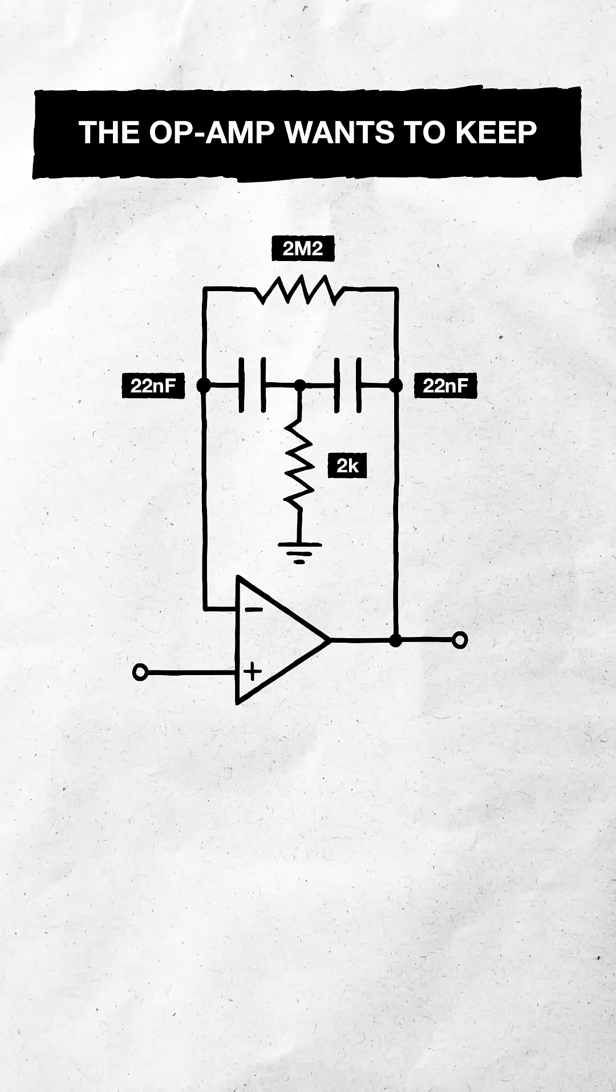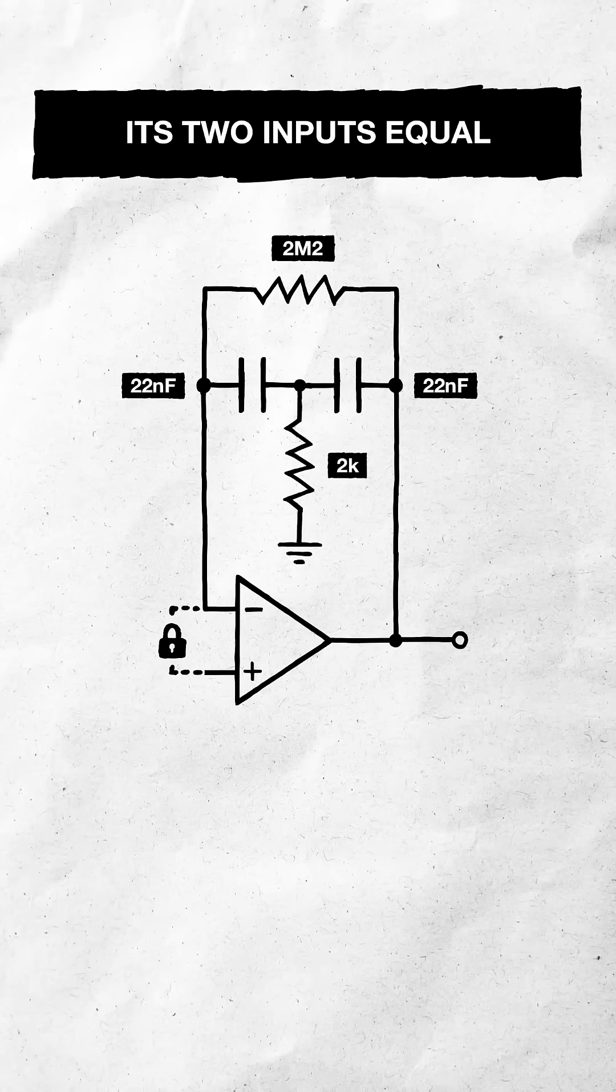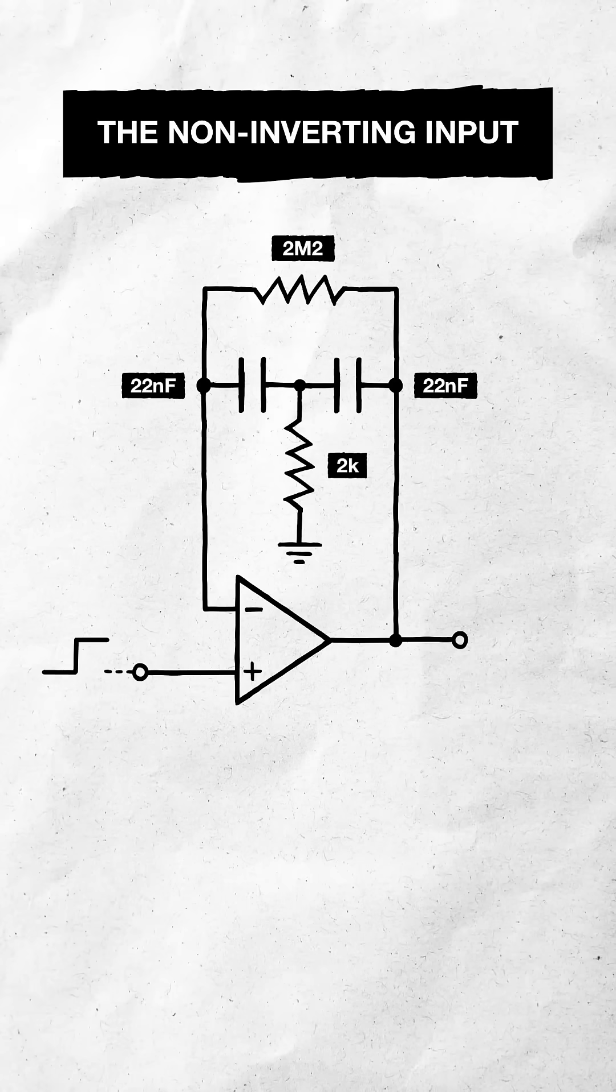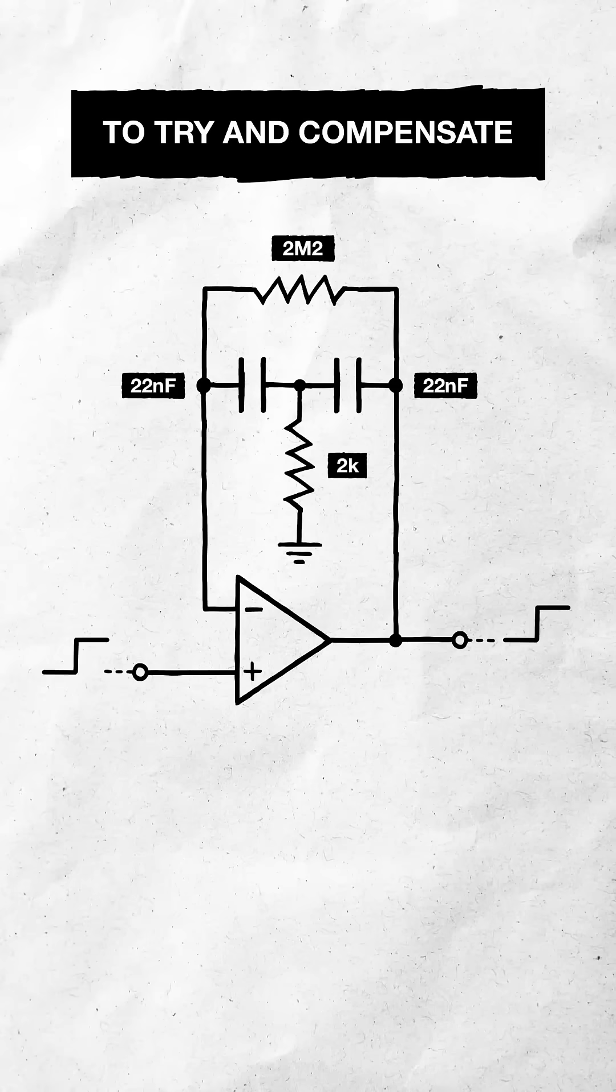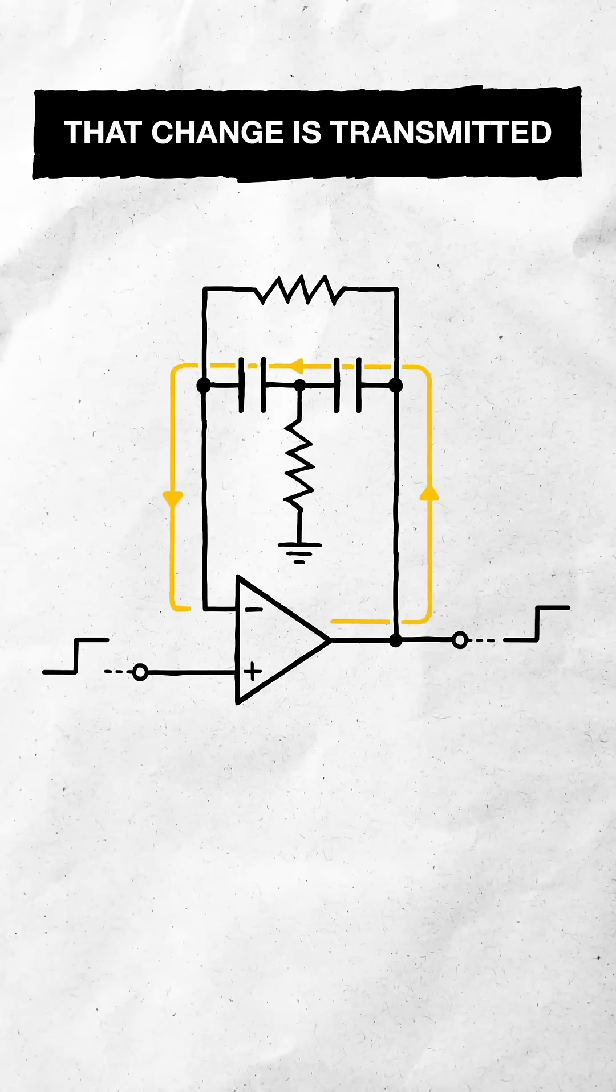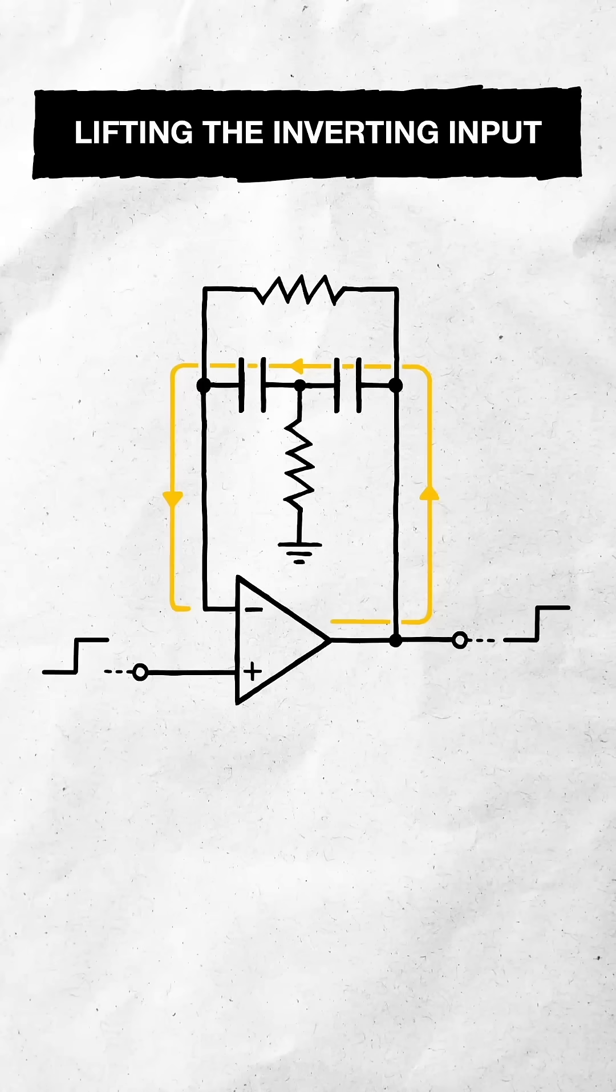Here's how it works. The opamp wants to keep its two inputs equal. So if we raise the non-inverting input, it raises its output to try and compensate. That change is transmitted via the capacitors, lifting the inverting input.